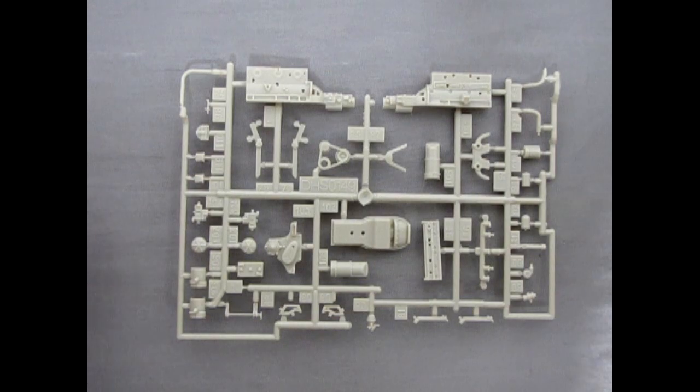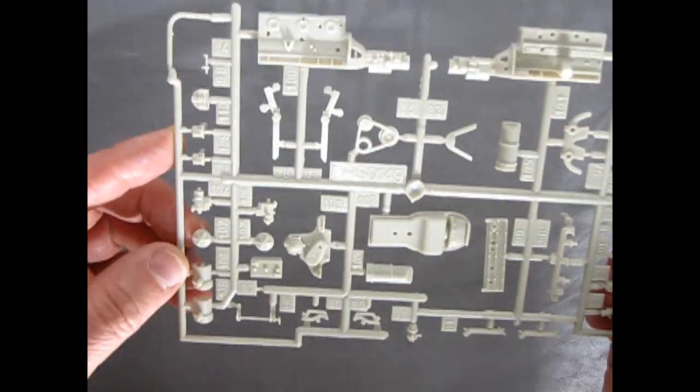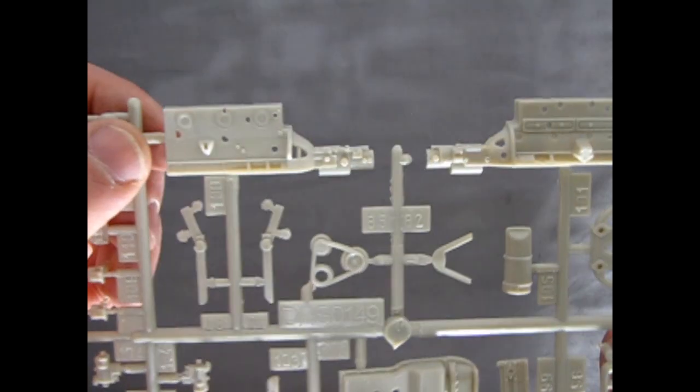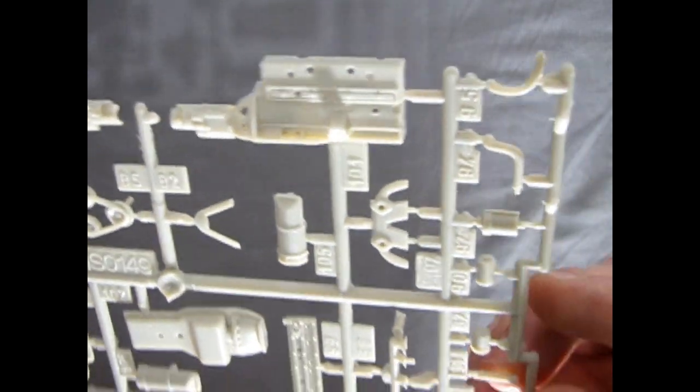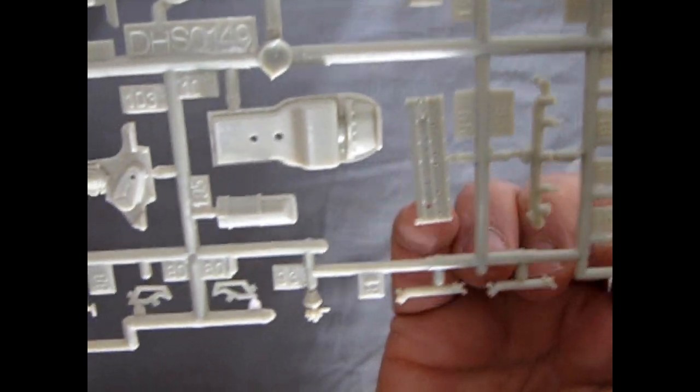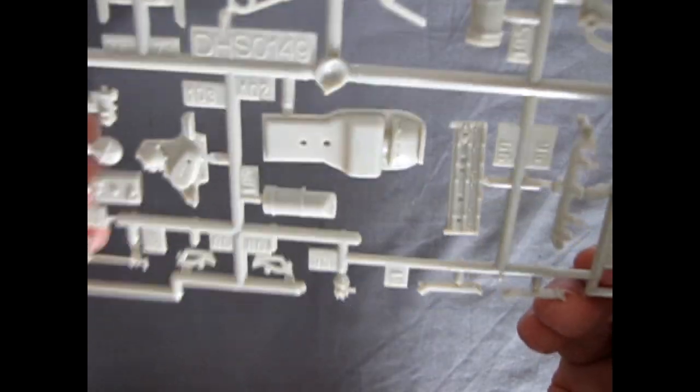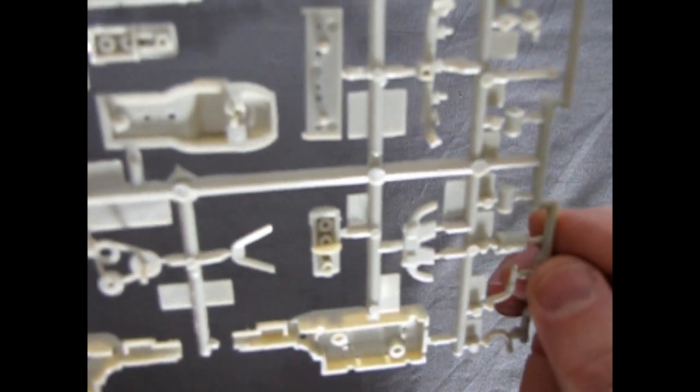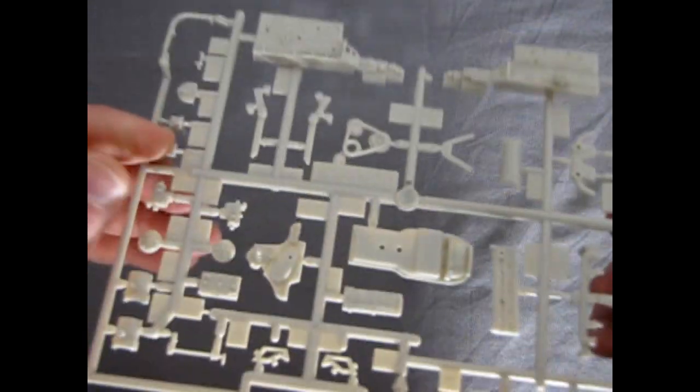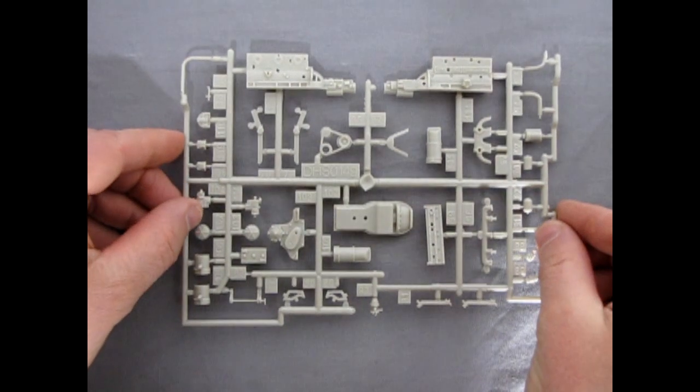Our first parts tree includes all the components to build our engine as well as some under hood details. And again you can see the molding on this is excellent. Just take a look at that twin H power engine as well as our cylinder head here. There's our oil pan and transmission cover. Underneath of course, very good from this end too. A couple of little mold marks and whatnot but these should not present much of a problem as you build this great model kit.